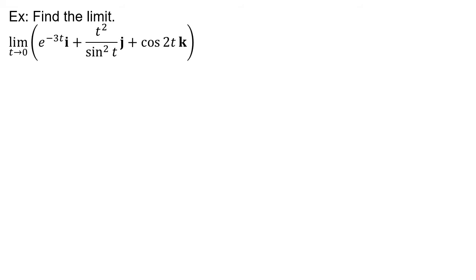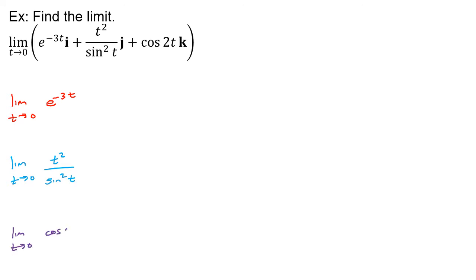Find the limit of each one of these. If I want to do the limit as t approaches 0 of this vector value function — e^(−3t)i plus t²/sin²(t)j plus cos(2t)k — I literally just do the limit of each one. The e^(−3t)i component: I can just plug 0 in. That's e^(−3·0) = e^0 = 1. So that limit is 1.